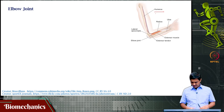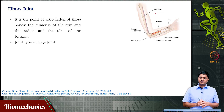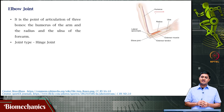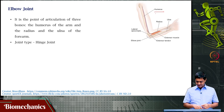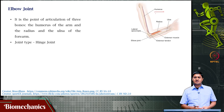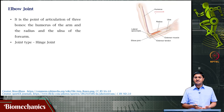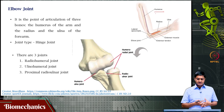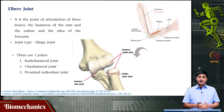Since there are three bones involved, essentially there are three joints that are possible: the joint between the radius and ulna at the proximal end, the joint between the radius and humerus, and the joint between the ulna and the humerus. The elbow joint has a single degree of freedom — it is a hinge joint with only one degree of freedom. This movement is called flexion and extension. So there are three joints: the radio-humeral joint, ulno-humeral joint, and proximal radial-ulnar joint.